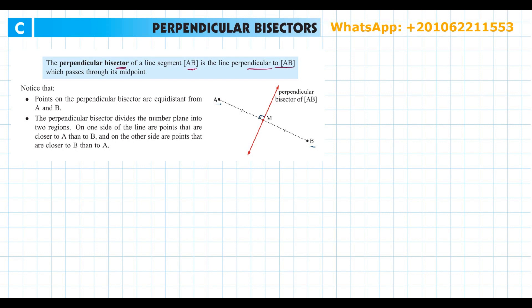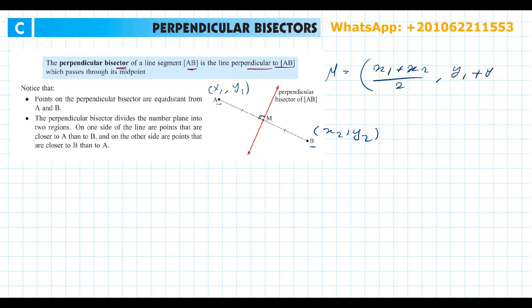If you need to find the midpoint between two points A and B, where point A is (x1, y1) and point B is (x2, y2), the midpoint M equals ((x1 + x2)/2, (y1 + y2)/2). This is the first rule we're going to deal with today.